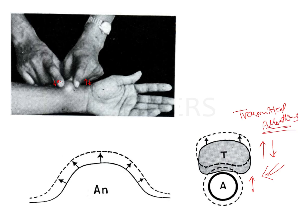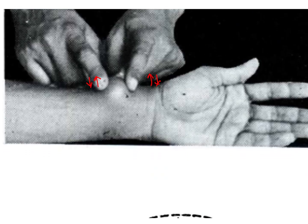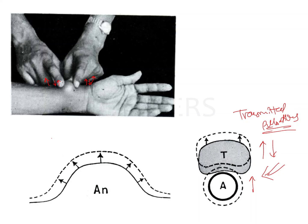The second type is expansile pulsation. In this case, if you place your fingers over the edges of the swelling and the fingers rise and they move apart from each other — that is, the direction of movement of the fingers is away from each other — this type of pulsation is known as expansile pulsation, where the fingers rise and move away from each other. This shows that the pulsation is being generated within the swelling.